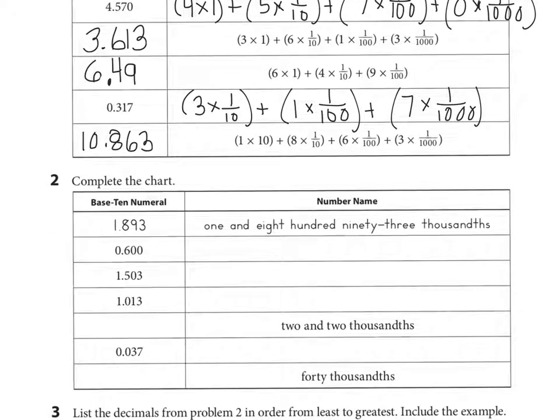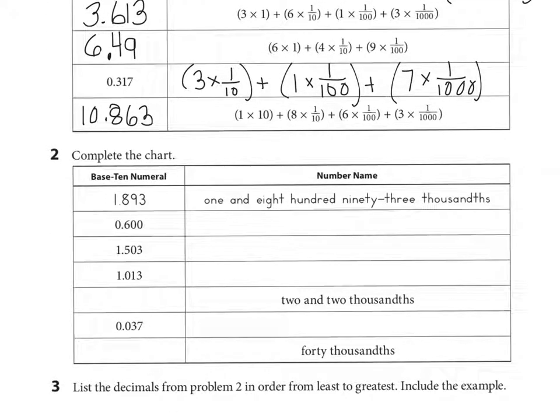Number 2, we're completing the chart. This time we're going to write it in word form. The first one's been done for you. Let's look at the next one. We see 0.600. We could call this 6 tenths. Because we see these 0's, we know it's also 600 thousandths. So both answers are correct, because we know that both those numbers have the same value.